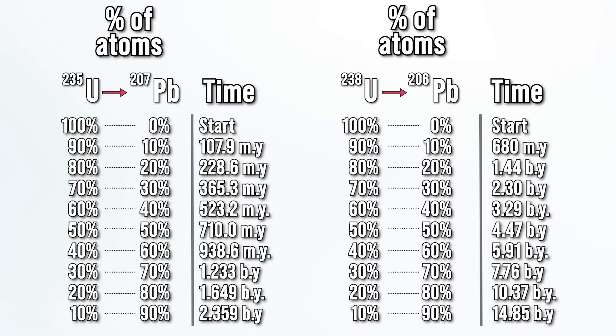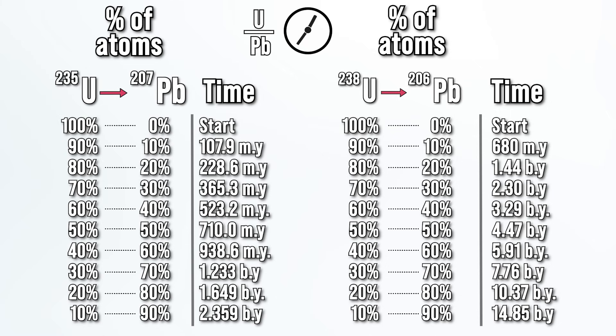The older the rock or mineral, the more of its uranium will have decayed to form lead. Thus, the ratio of uranium to lead in the rock behaves like a clock. Two tiny clocks, in fact. One for each isotope of uranium.